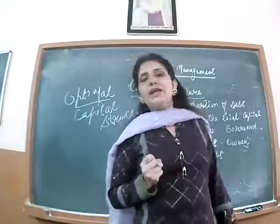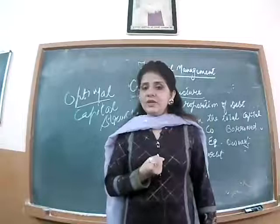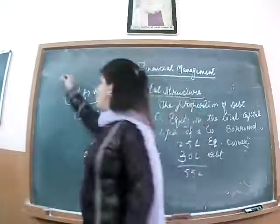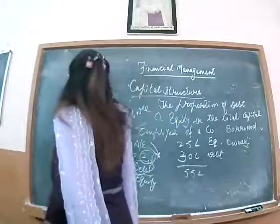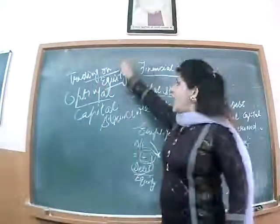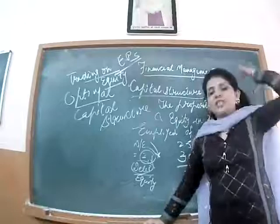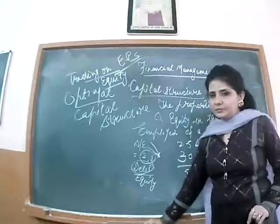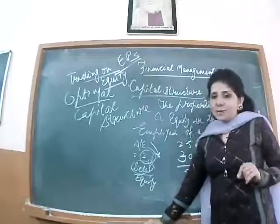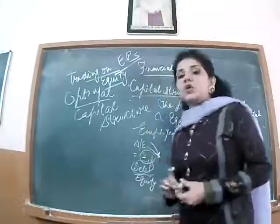Going forward, this term will also be called trading on equity — how many debentures should be raised with equity so that earnings per share (EPS) should increase. That concept is formally called either financial leverage or trading on equity. Now I am taking the example of X Company — at which level of debt will earning per share increase? Let's assume a few situations and analyze the case of X Limited.